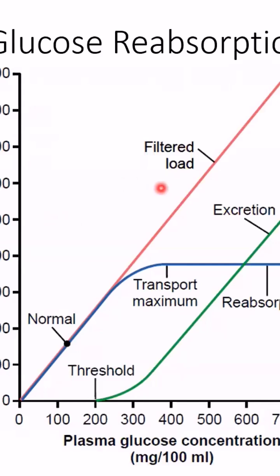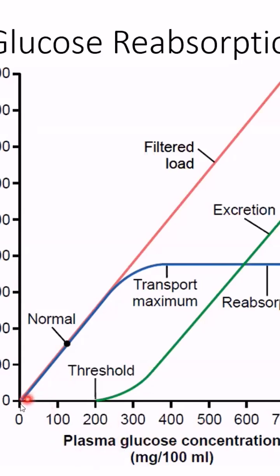Let's always first look at the axes — the y-axis and the x-axis. Along the x-axis, plasma glucose concentration is shown. The y-axis can be read in different ways depending on which curve you are looking at.